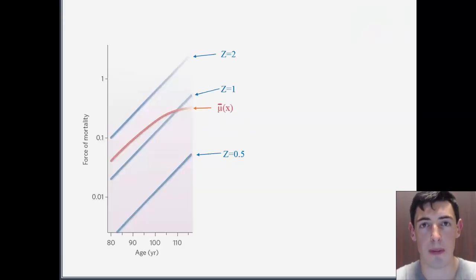The model for individuals depends on random variable z, called frailty, that is unobserved.